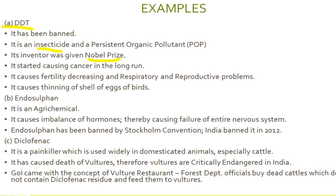However, DDT started causing cancer in the long run, as well as decreasing fertility and causing respiratory and reproductive problems. It also caused thinning of the shells of birds' eggs. That is why it has been banned. The next example is endosulfan, an agri-chemical that causes hormonal imbalance and failure of the entire nervous system. It has been banned by the Stockholm Convention, and India banned it in 2012.